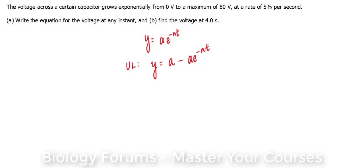With that said, we have some very important information here. One, we know the rate is 5% per second. Additionally, we have the time, but we'll leave that for part B. What else do we know? We know that the upper limit is 80, so your a value will be 80 volts.